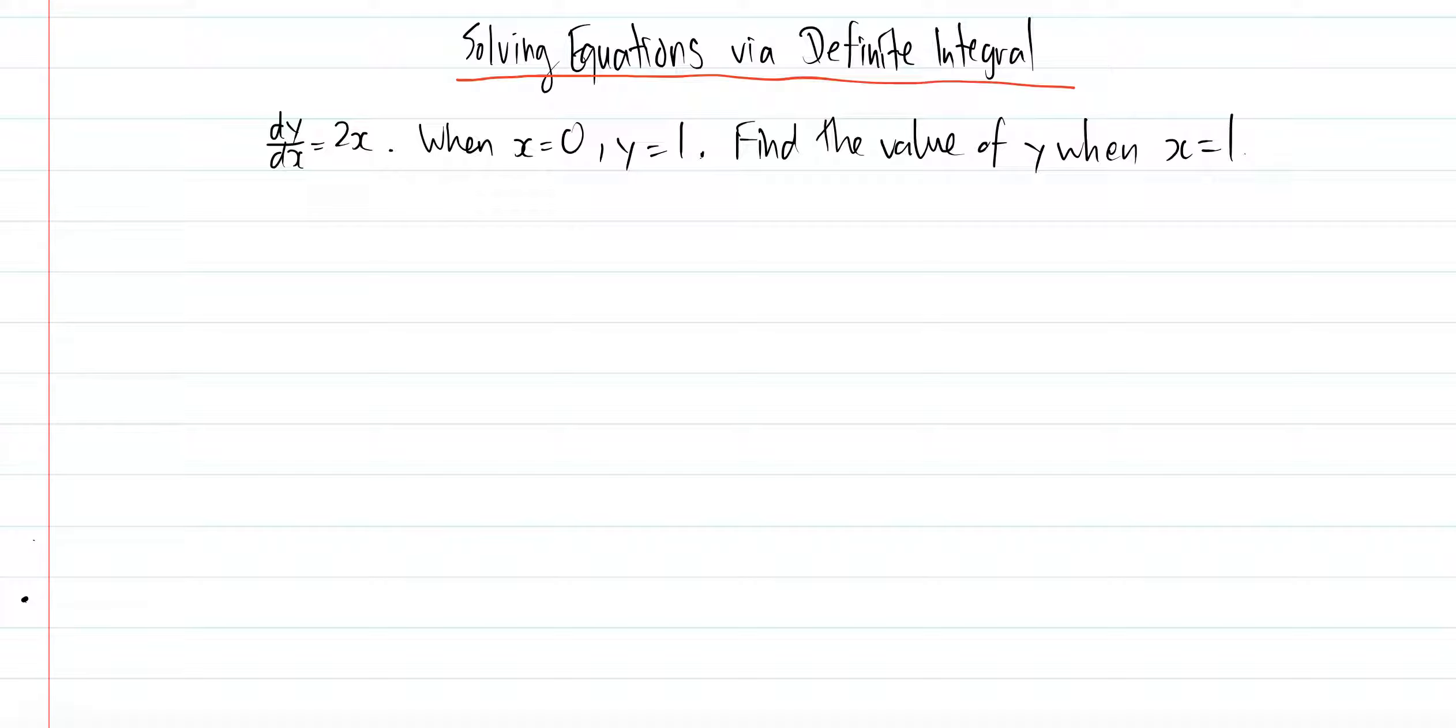You'll be given some points, so x equals 0, y equals 1, to solve for that C value. Because you know if you integrate something you end up with plus C at the end, and that's what the point is for.